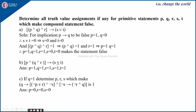We got the values of s and t. Now the left-hand side has to be true, so p and q and r is equal to 1 when p and q are 1 and r is also equal to 1. This implies p equals 1, q equals 1. Therefore p equals 1, q equals 1, r equals 1, s equals 0, and t equals 0 makes this statement false.